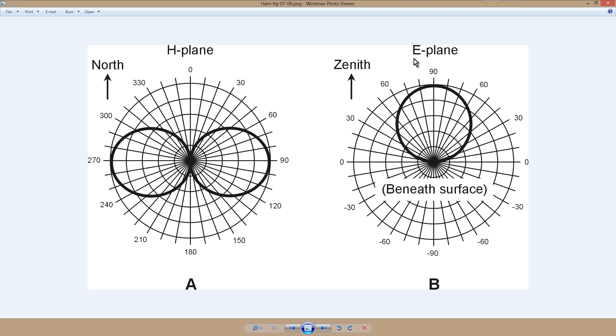Now this graph, called an E-plane graph, that means elevation. E stands for elevation. When these negative values down here are under the ground, we are assuming that this antenna is one quarter of a wavelength above the ground. When you have an antenna like that, a dipole like that, the maximum radiation, believe it or not, is straight up.